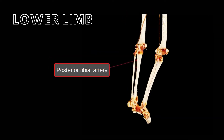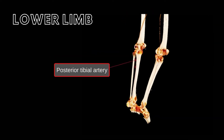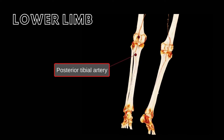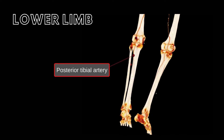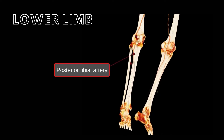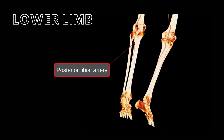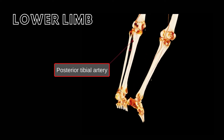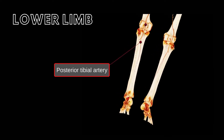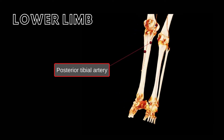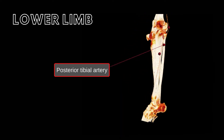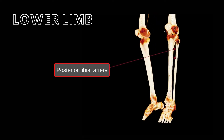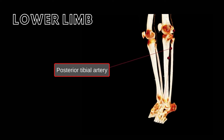The posterior tibial artery passes inferiorly through the leg and enters the foot on the medial side of the ankle, where it divides into the lateral plantar artery and the medial plantar artery. Both of these eventually form the deep plantar arch and join with the dorsalis pedis artery.